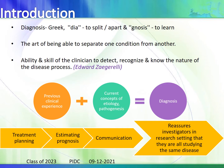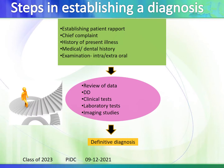The main steps in establishing a diagnosis include: establishing good patient rapport, collecting the chief complaint, collecting the history of present illness, medical and dental history, and intra- and extra-oral examination. After reviewing the data, a provisional diagnosis is made, followed by a set of differential diagnoses. Clinical testing, laboratory testing, and imaging studies together with history and examination lead to a definitive diagnosis.